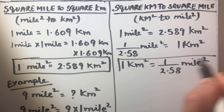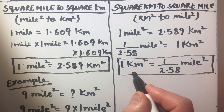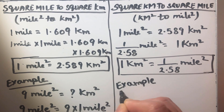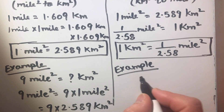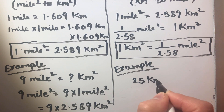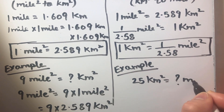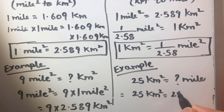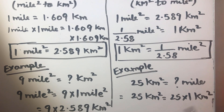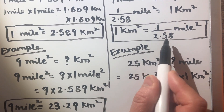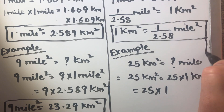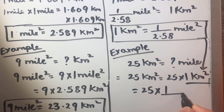So this is our conversion factor to convert from square kilometers to square miles. Let's take an example. Suppose we need to find out how many square miles are there in 25 square kilometers. We can write 25 square kilometers as 25 times 1 square kilometer, and we know that 1 square kilometer is 1 over 2.58 square miles.